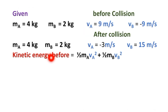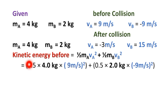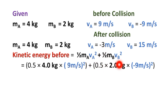Now, kinetic energy before. Kinetic energy before is equal to kinetic energy of ball A plus kinetic energy of ball B. KE before = 0.5 × mass of ball A × (velocity of ball A)² + 0.5 × mass of ball B × (velocity of ball B)².